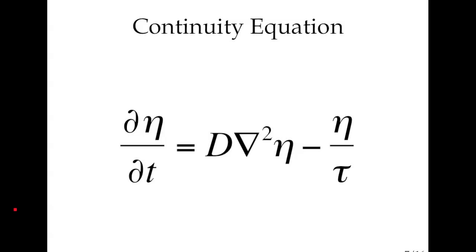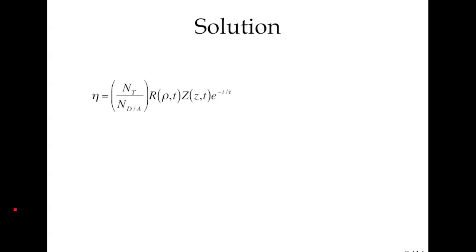And the time rate of change of that parameter, the injection level, is determined by the continuity equation. So I've determined that the time rate of change of the injection level is going to be related to the diffusive flux through the diffusivity and the recombination term. In this I'm assuming a constant lifetime. In reality, tau does depend on injection level, but this is the first step to solving it, was to assume a constant.